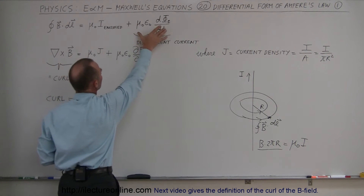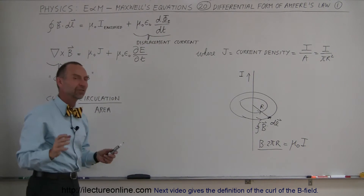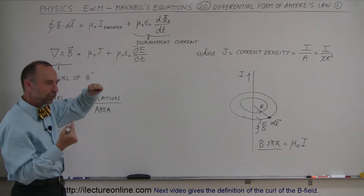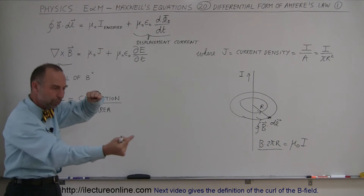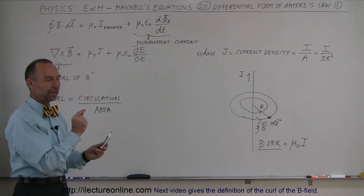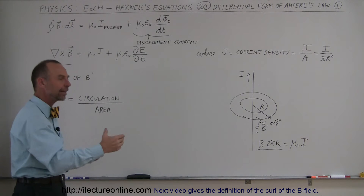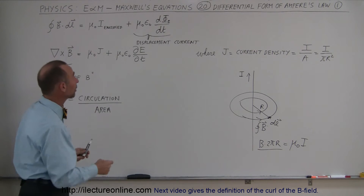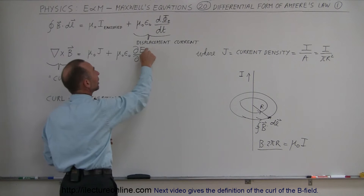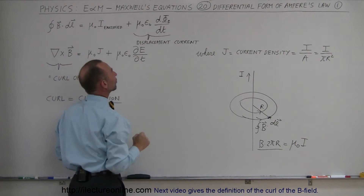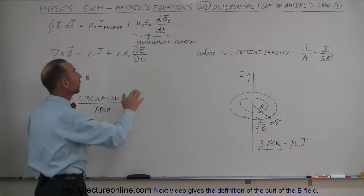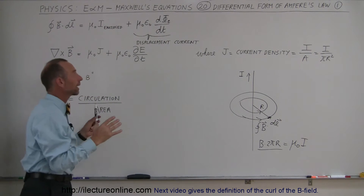There is also a second term, called the displacement current, which has no real current in it. That's a situation where a magnetic field exists in space — typically in a loop structure — and if we have a changing electric field in a particular volume of space, there will be a magnetic field around that region. A change in electric flux, multiplied times the permeability and permittivity of free space, acts as if there is a current there and sets up a magnetic field.